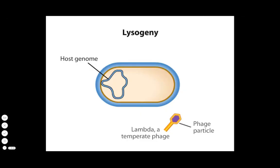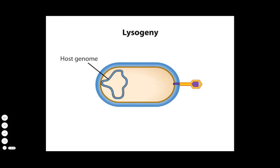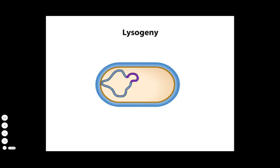In lysogeny, the phage first attaches to its host and injects its genetic material inside the bacterial cell. Linear double-stranded DNA is then circularized. The circularized genome then recombines into that of the host by site-specific recombination of DNA. The integrated phage genome is called a prophage.